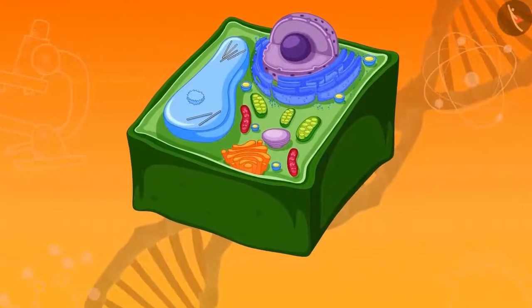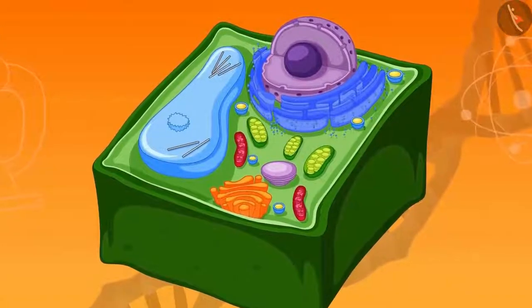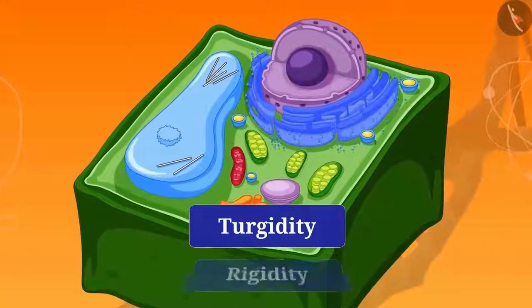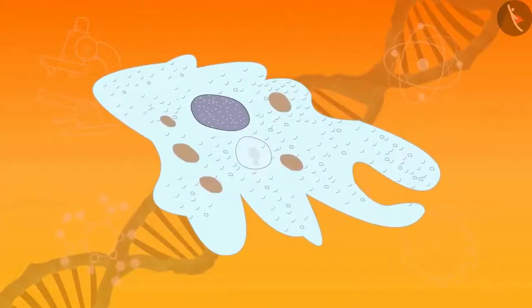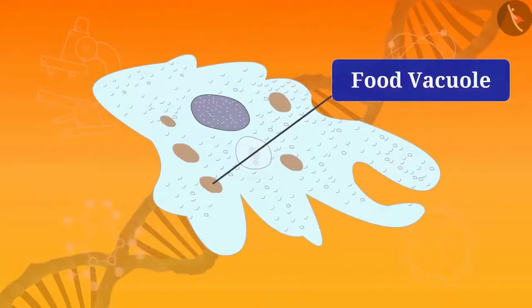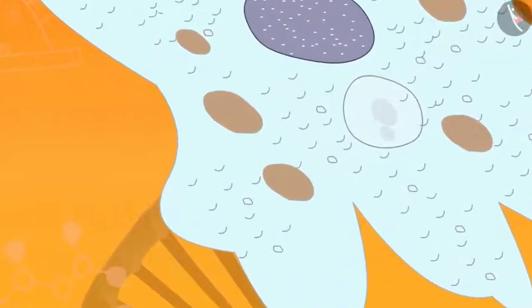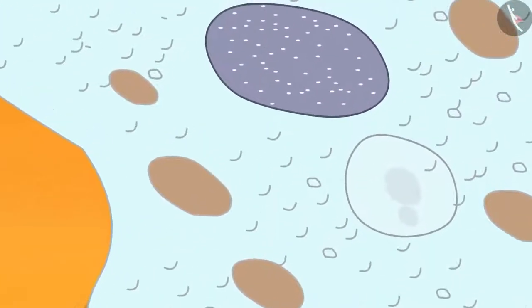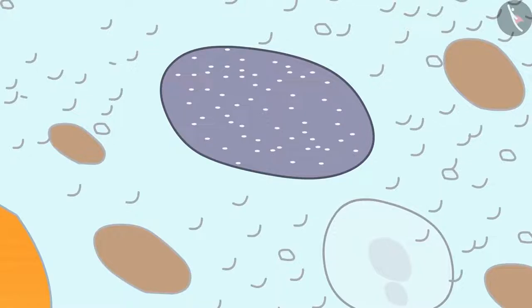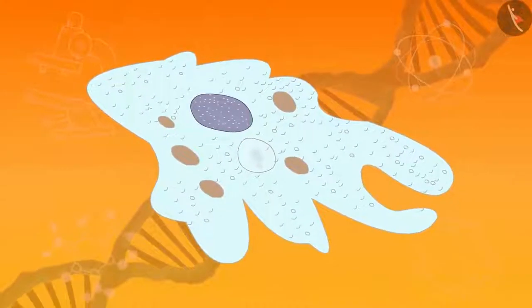In plant cells, vacuoles are full of cell sap and provide turgidity and rigidity to the cell. In single-celled organisms like amoeba, the food vacuole contains the food items that the amoeba has consumed. In some unicellular organisms, specialized vacuoles also play important roles in expelling excess water and some waste from the cell.